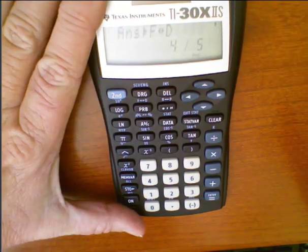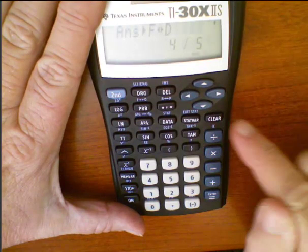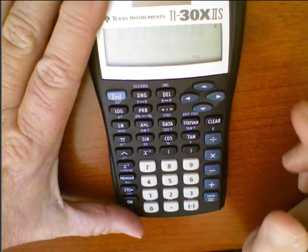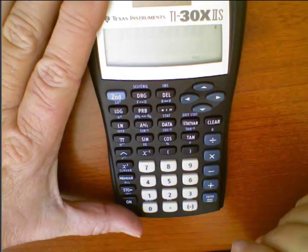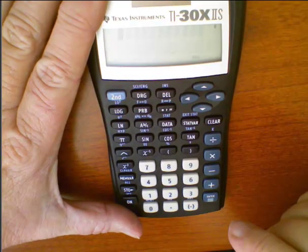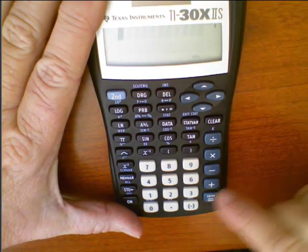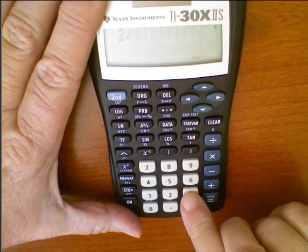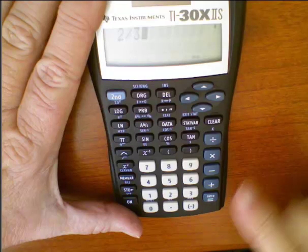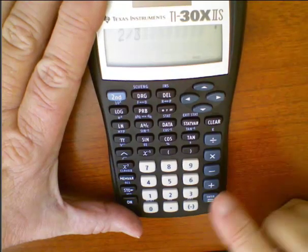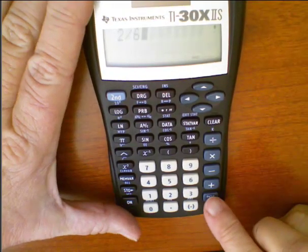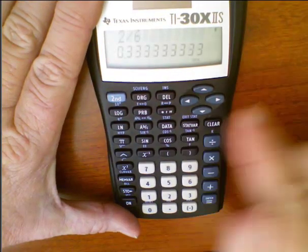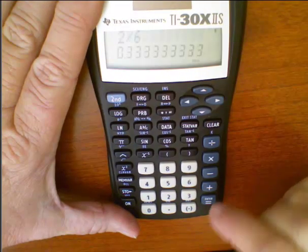Let's try one more. So we will clear first. And let's try one that we know is going to give us a repeating decimal. If we do 2 divided by 6, gives us 0.33...